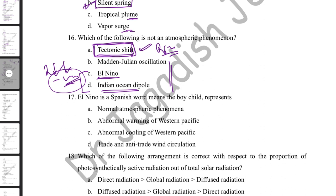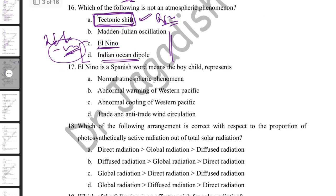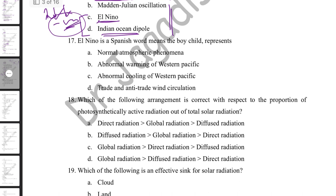El Niño is a Spanish word meaning 'the boy child.' It represents abnormal warming of the western Pacific. With respect to India, El Niño causes negative effects on rainfall. The Indian Ocean Dipole also contributes to drought situations in India.